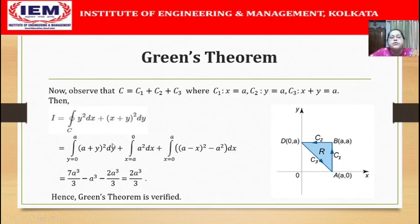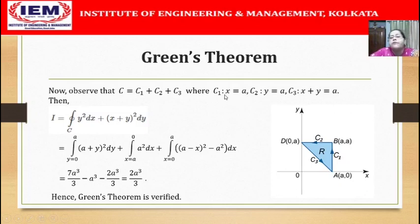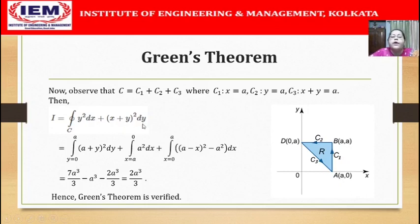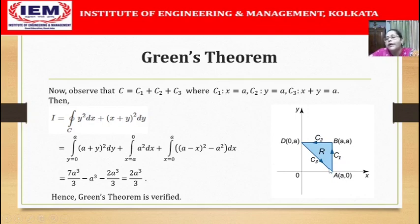Along C1, where x equals a, dx equals 0, so the first term vanishes and we are left with (x plus y)² dy. With x equals a the integrand becomes (a plus y)², and we integrate with respect to y as y varies from 0 to a.